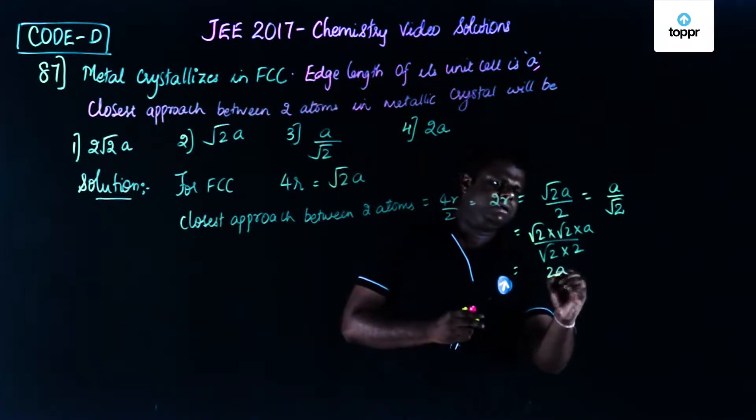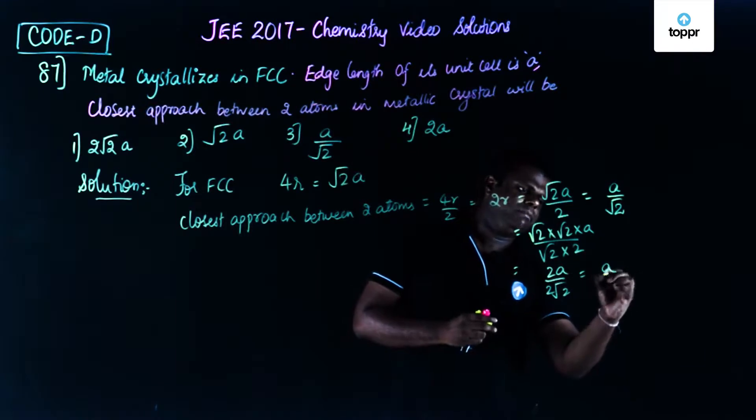So this becomes 2a by 2 root 2. So this becomes a by root 2.